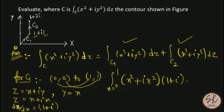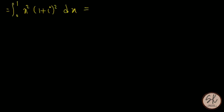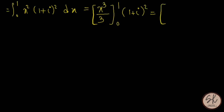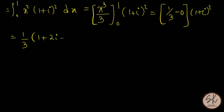So dz = (1 + i) dx. The integral along C1 becomes the integral from 0 to 1 of x²(1 + i)² dx. Taking x² common gives (1 + i)² times the integral of x² dx from 0 to 1, which evaluates to x³/3 from 0 to 1, giving (1/3)(1 + i)². Expanding (1 + i)² = 1 + 2i − 1 = 2i, so the result is 2i/3.